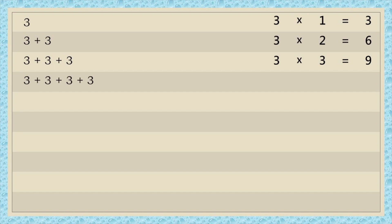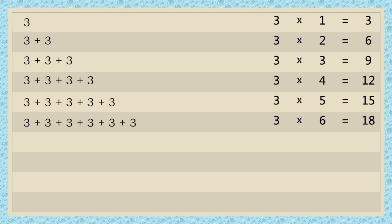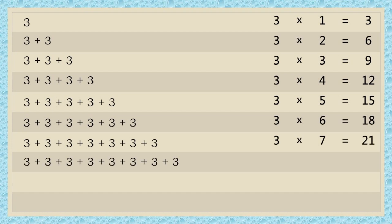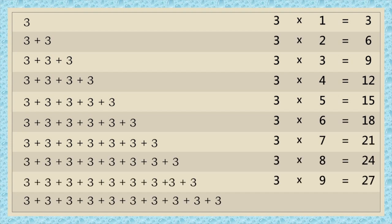Three plus three plus three plus three — three is written four times, so three into four is equal to twelve. Similarly, we go on adding the same number several times till we come to three into ten is equal to thirty. Similarly, you can construct tables of four, five, and six and so on.